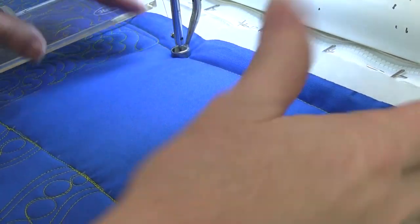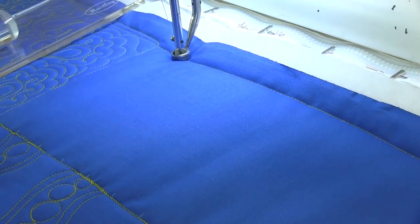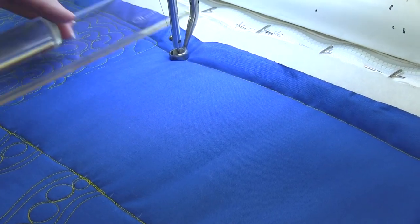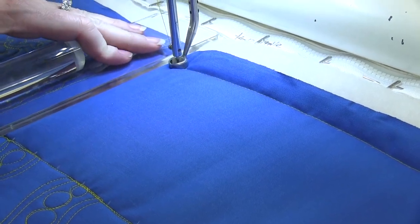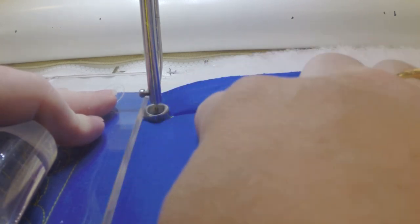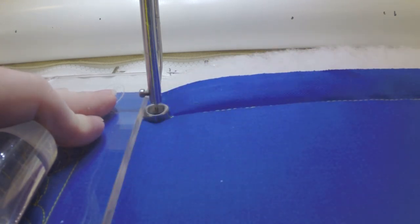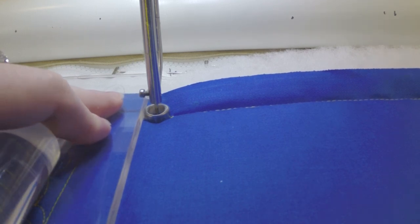I've got this space as if it were a large border, and I have my extended base on my machine so that I can use the rulers safely, and I have my ruler foot on. I'm just going to nudge up my ruler against the foot. I've made little tick marks every inch across the top and the bottom so that I can line this up, and I'm just going to go down the edge of my ruler.